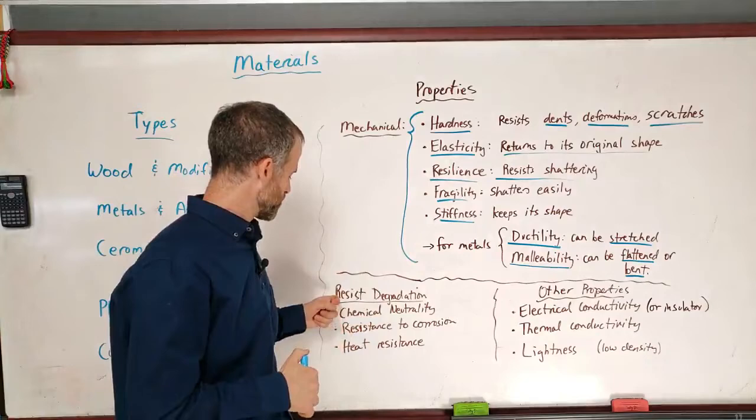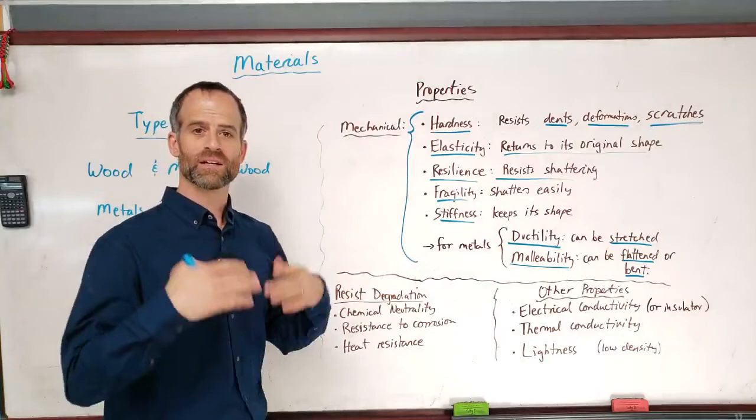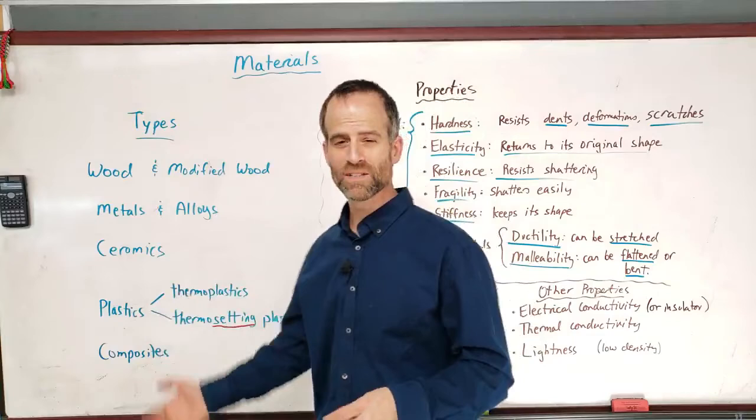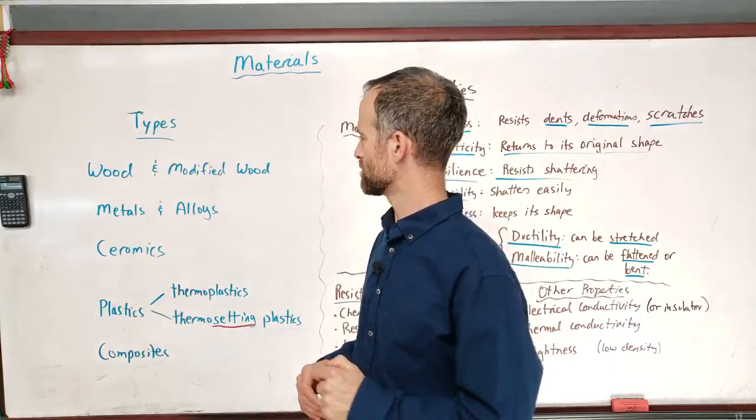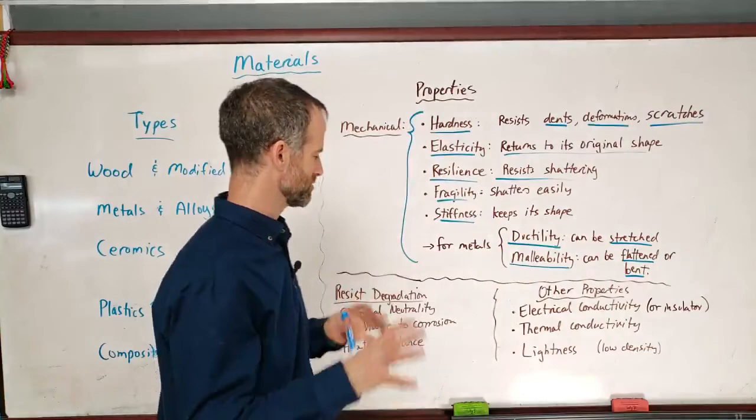Okay, so what are the properties for resisting degradation? Well, chemical neutrality. Chemicals don't affect it. So for example, generally speaking, ceramics are pretty good at resisting chemical attack. Plastics can be pretty good depending on the type of chemical. Even metals for some things.